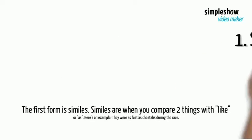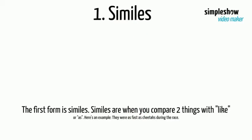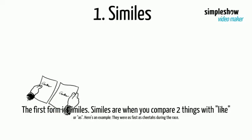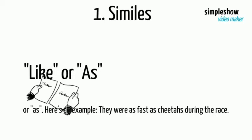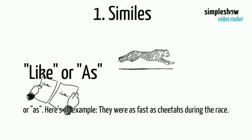The first form is similes. Similes are when you compare two things with "like" or "as." Here's an example: They were as fast as cheetahs during the race.